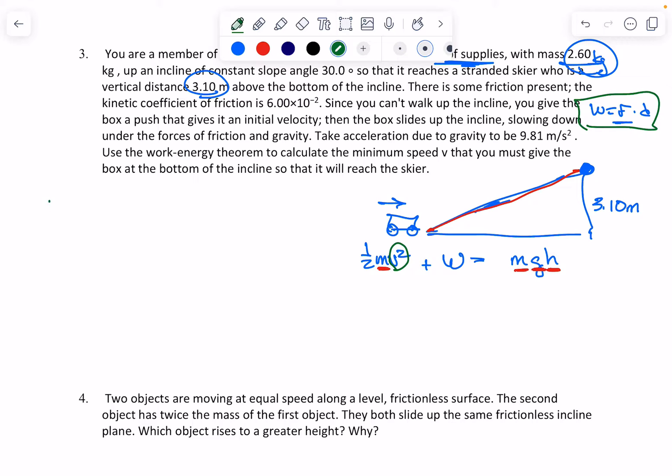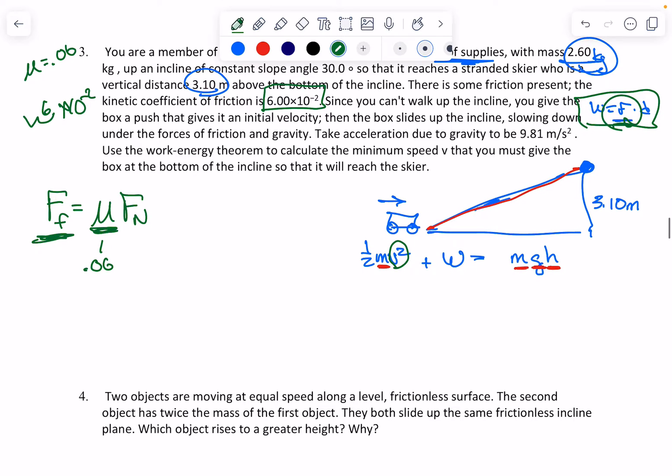Now the force there is the force of friction. And if you remember, the force of friction is the coefficient of friction times the normal force. Now they gave us the coefficient of friction, that's this number right here. So 6 point whatever times 10 to the minus 2. You move the decimal place over two places. So mu equals 0.06. So this is 0.06. So all we now need to do, this is not the work, this is the force of friction. This is finding this number over here.